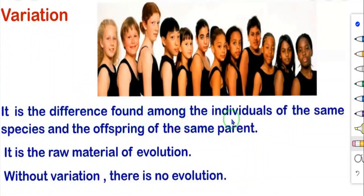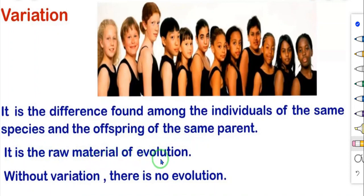Variation is the difference found among the individuals of the same species and the offspring of the same parent. Looking at the diagram, all persons appear totally different from one another, demonstrating variation. Variation is the raw material — the basic material — of evolution. Without variation there is no evolution. There are two types of variations: somatic variations and germinal variations.